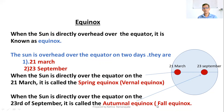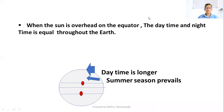When the Sun is overhead on the equator, it is also called the Fall Equinox in autumn. When the Sun is overhead over the equator, the daytime and nighttime are equal throughout the Earth. That is why this day is very special.